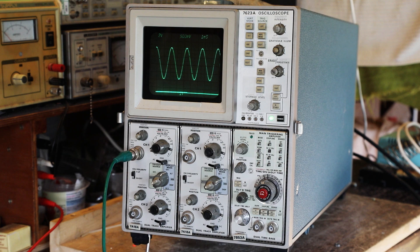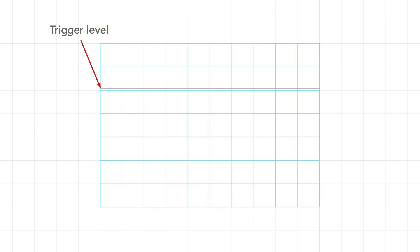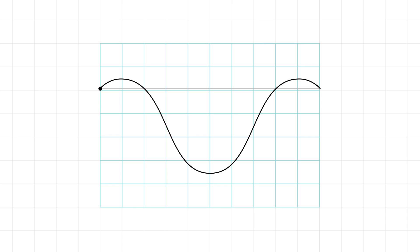Analog scopes used to start the scan at the point of triggering, and we'll use this approach for some of the animations, as it provides a good way of explaining what's happening. We're able to set the trigger point to a particular value, and when the waveform reaches this, the trigger is fired and the scan starts, and the waveform is seen on the screen.